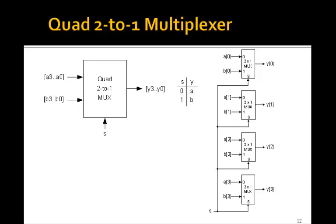Finally, let's look how we can make a quad 2 to 1 mux. This is a 2 to 1 mux, that is a single control line. If s is 0, these four a's go to these four y's. That is y3 is the same as a3, y2 the same as a2 and so forth, y0 the same as a0. And if s is 1, then the four b's go to the output y.